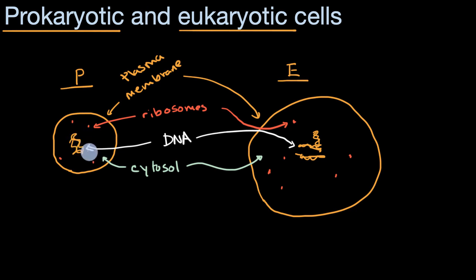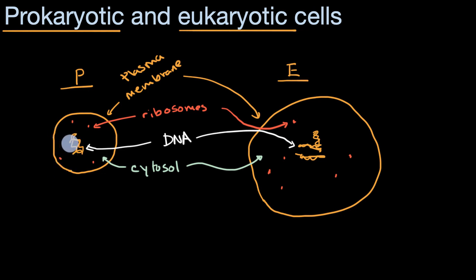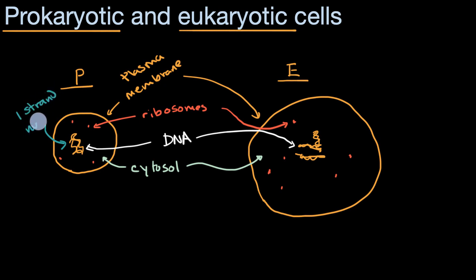Now let's think about how these things are going to be different. Eukaryotic cells are generally going to be more complex than prokaryotic cells. Prokaryotic cells tend to have a single strand of DNA — oftentimes it is in a loop, bundled in there — and we call that region the nucleoid.